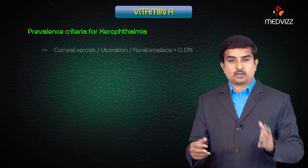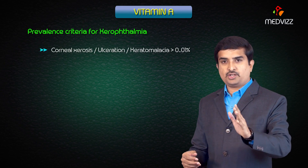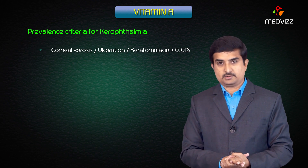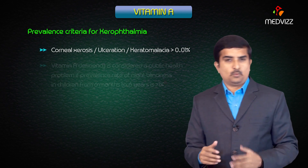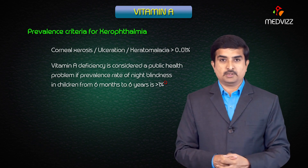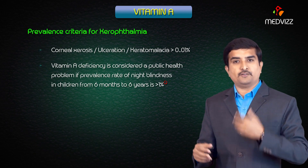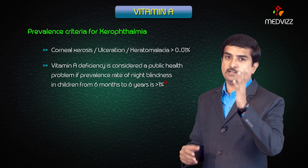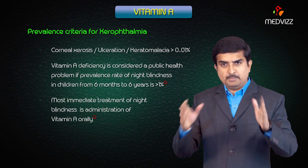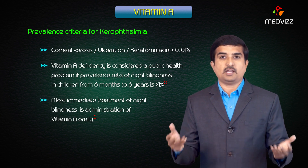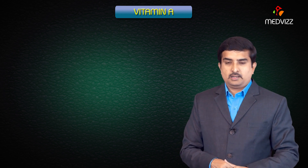Corneal xerosis, ulceration, and keratomalacia prevalence threshold is greater than 0.01%. Vitamin A deficiency is considered a public health problem if the prevalence rate of night blindness in children 6 months to 6 years is greater than 1%. The most immediate treatment for night blindness is oral administration of vitamin A.